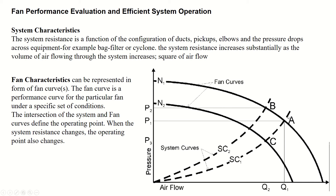There are three points — A, B, and C — and two fan curves: the first at N1 (higher RPM) and the second at N2 (lower RPM). At lower RPM, both pressure and volumetric airflow Q are lower. As airflow decreases, the pressure drop in the conducting system also decreases.